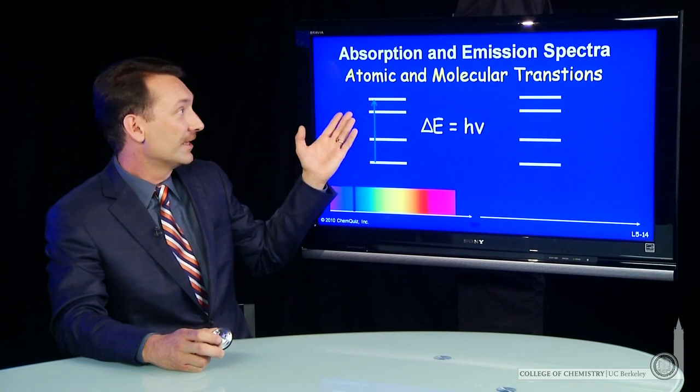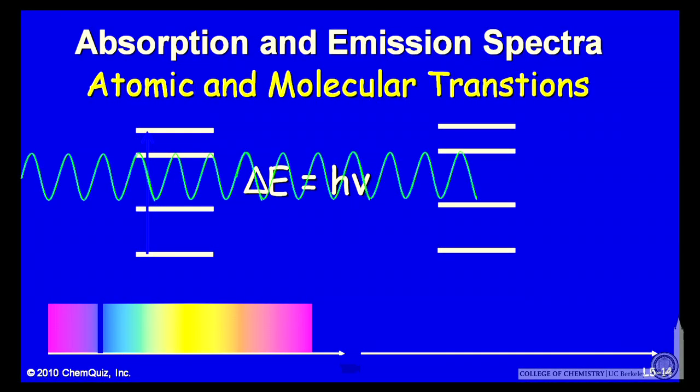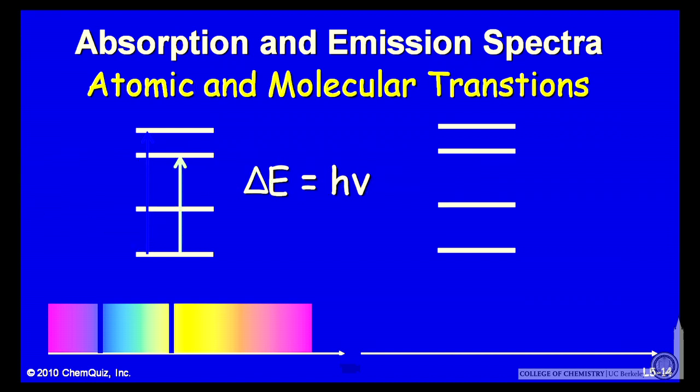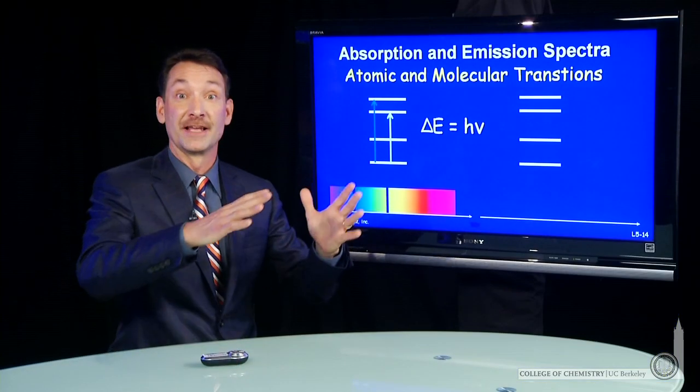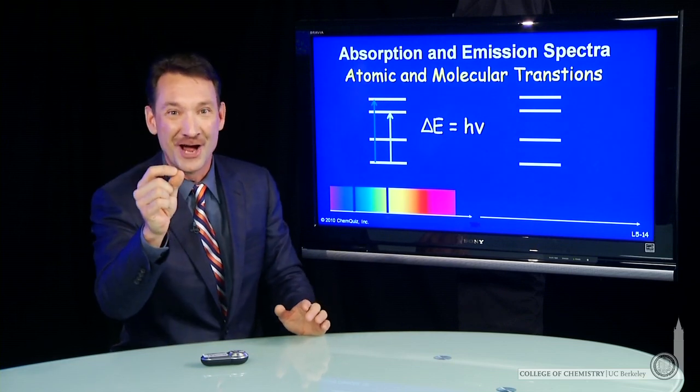And of course, atomic and molecular transitions work like this. You'll have some wavelengths that will pass right through. Some wavelengths will be absorbed. It's like the Goldilocks principle of atomic absorption. Some wavelengths are too big. Some are too little. Some are just right.